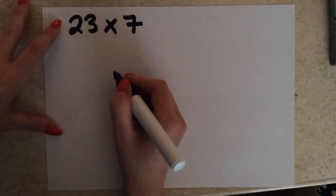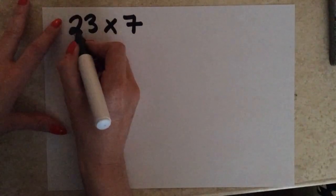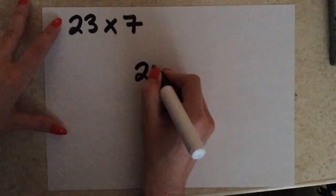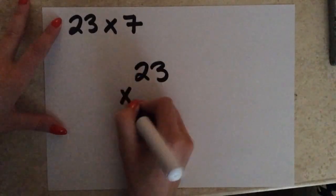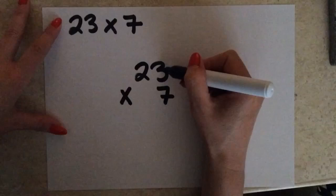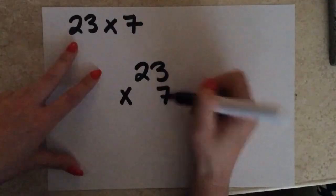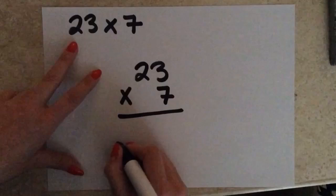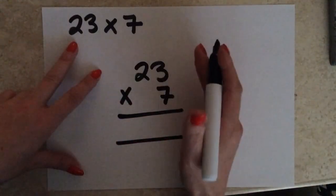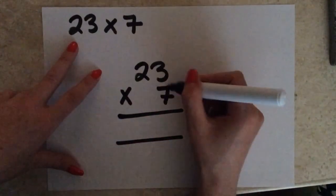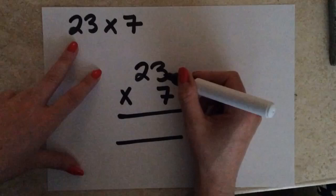Now, for the traditional method you need to set this out in a column. So, I've got my 23, I'm going to multiply that by 7. 3 is in the units, the 7 is in the units, so these need to be lined up together. Then we always start on the right hand side. So I'm going to multiply together my 7 by my 3, which is going to give me 21.